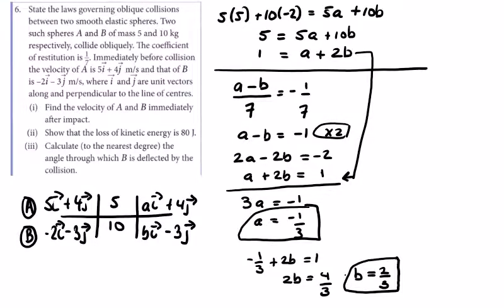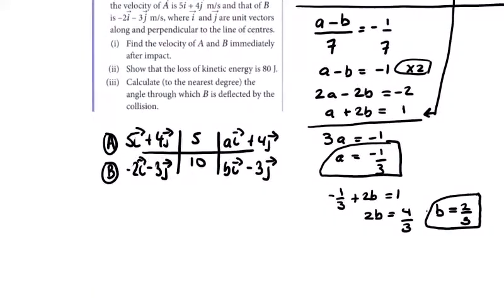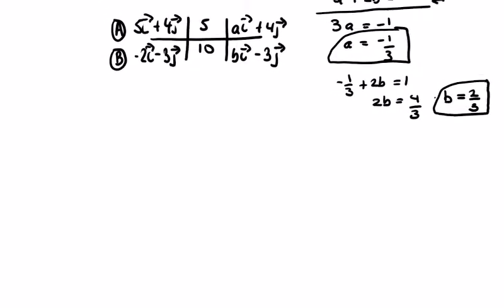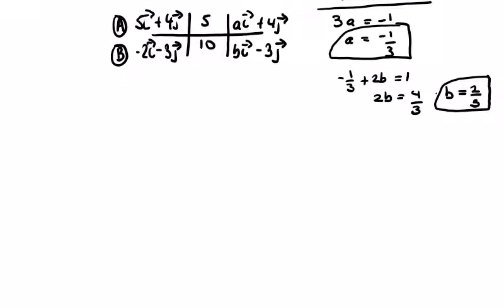In part two, we're asked to show that the loss of kinetic energy is 80 joules. We have a and b values, so the magnitude of velocities: initially A has √(25+16) = √41, and B has √(4+9) = √13.